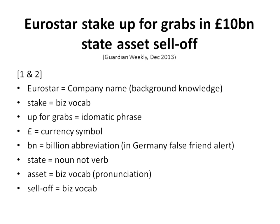There's also a false friend alert for German speakers: a billion in German is actually a trillion in English. Then 'state' as a noun, not a verb. 'Asset' — and the pronunciation of asset. 'Sell-off' could be a verb or a noun. And a minimal pair: stake/state/stage — pronunciation. So just simply with the headline, we've got a lot that we can work on.